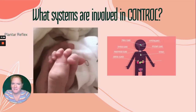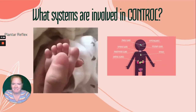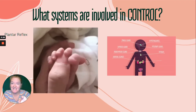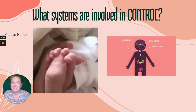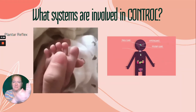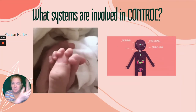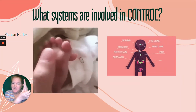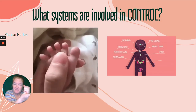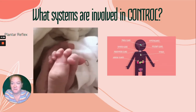So what systems are involved in control? This image shows the plantar reflex, which only works with newborns — you press on this part of their foot and they will curl around your finger.